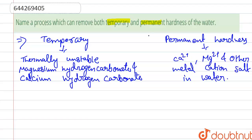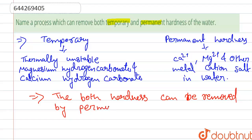So both temporary and permanent hardness can be removed by the process which is known as permutit. This is the method, this is the process which can remove both temporary and permanent hardness. Thank you.